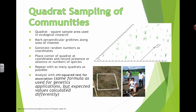In the next video, we're going to discuss how you would analyze that data statistically using something called a chi-squared test for association. You might have heard of chi-squared tests being used in genetics, when you have expected and observed frequencies with Punnett squares. The same concept can be used to analyze this kind of ecological data, but the expected values are calculated differently. We'll go through a detailed example in one of the next videos.